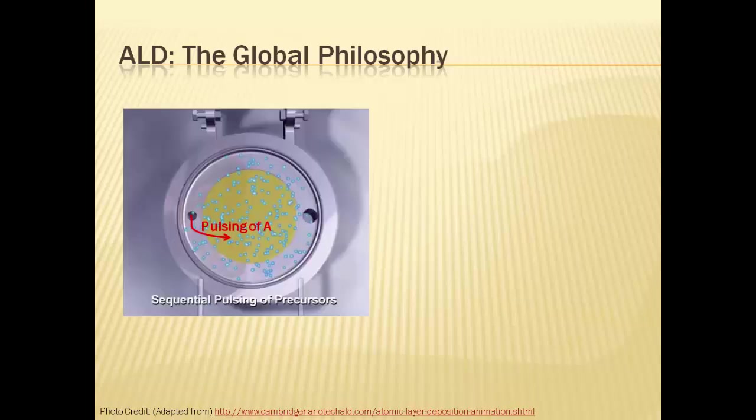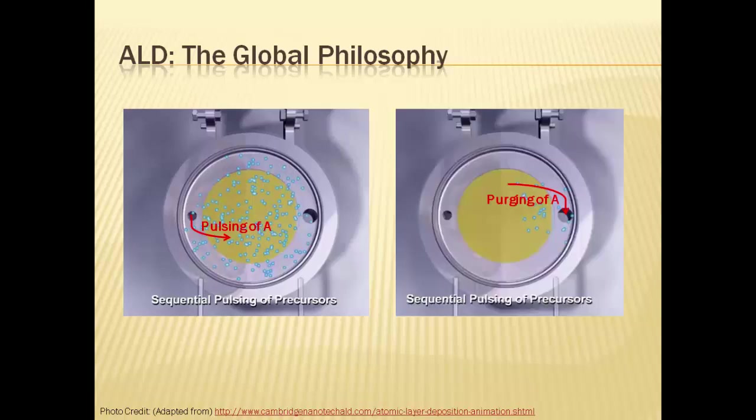As this picture depicts, precursor A shoots out of the left opening and streams across the yellow substrate. This precursor reacts with the substrate and products are formed which we shall look in a bit greater detail later. The excess precursor and the reaction side products so formed are pumped out of the reaction chamber through the opening on the right.